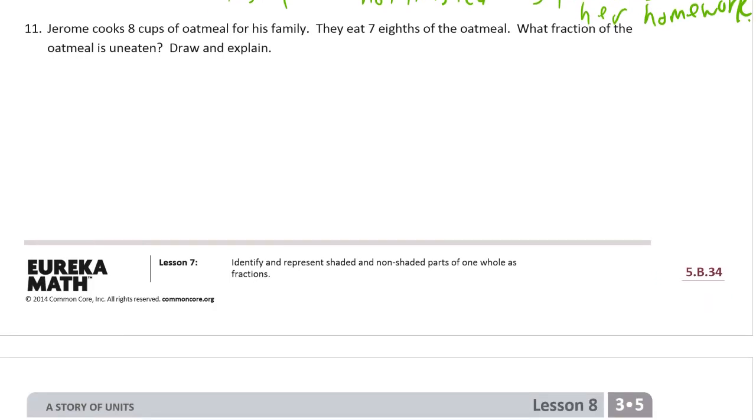Jerome cooks eight cups of oatmeal for his family. They eat seven-eighths of the oatmeal. What fraction of the oatmeal is uneaten? Draw and explain. So I'm going to make a tape diagram here. You don't have to use tape diagrams. You could do this—since this is eighths, we've got eight cups, and they're eating seven-eighths—you could draw a circle to do this because circles are pretty good for eighths.